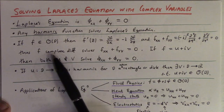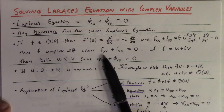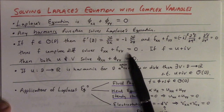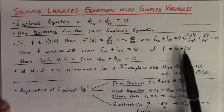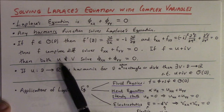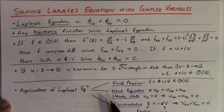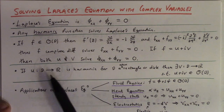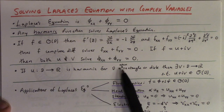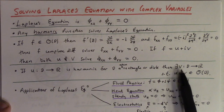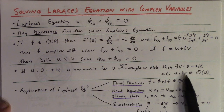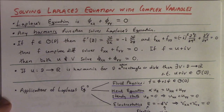So any complex differentiable function solves the complex version of Laplace's equation, meaning both component functions u and v are separately harmonic. We also had a theorem that if we have a harmonic function that is real-valued on an open rectangular disk, then there exists a harmonic conjugate v such that u plus iv is holomorphic.